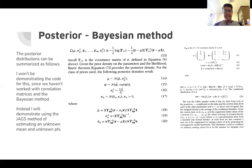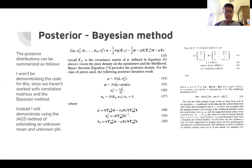These are some of the posteriors in the Bayesian method they are using. The likelihood as seen in equation 13 is given there. Given the prior density on the parameters and the likelihood, Bayes' theorem provides the posterior density. For the class of priors used, the following posteriors result: a posterior for mu — the mean of the stock returns — and psi, as well as the error terms for the autoregressive and random walk components.